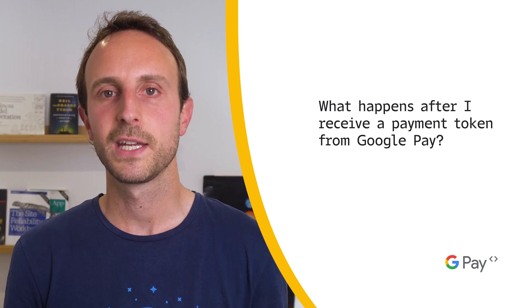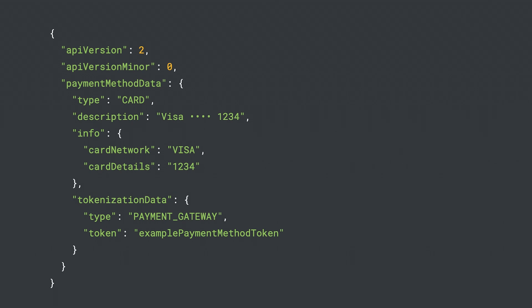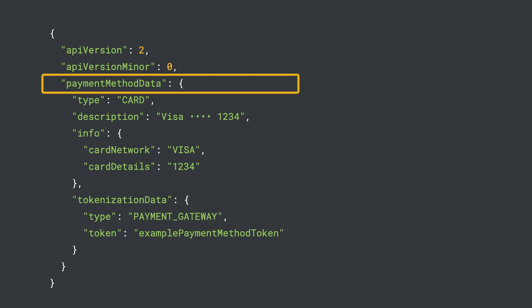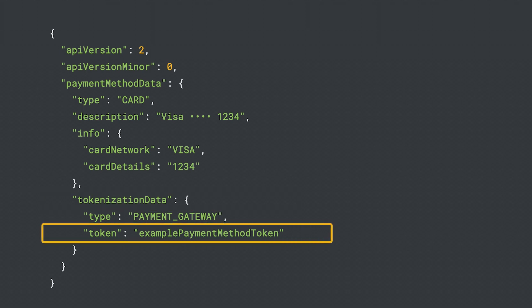What happens after I receive a payment token from Google Pay? After a form of payment is successfully selected, a result is returned back to your application or website in response to the payment data request. This result contains information about the payment request and the payment method itself, which in turn includes what we refer to as tokenization information. This object contains an opaque payload in stream format that you need to relay to your payment processor or gateway of choice.